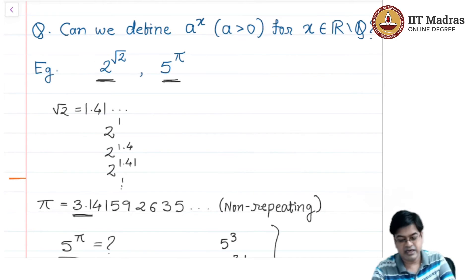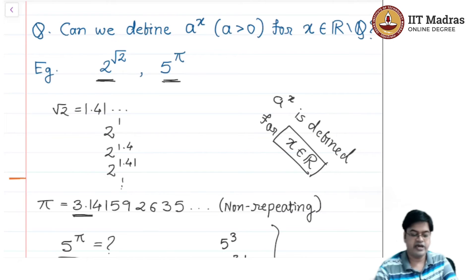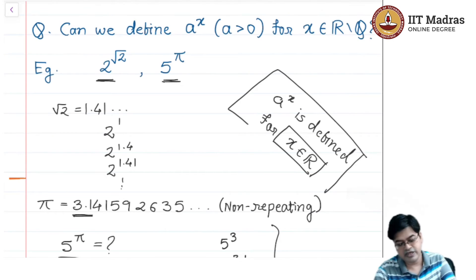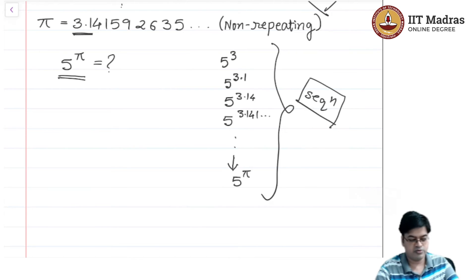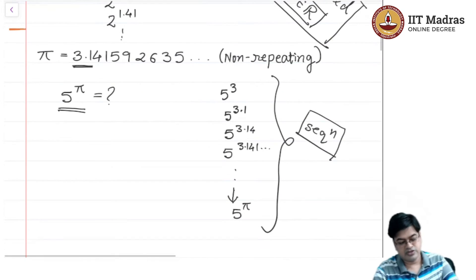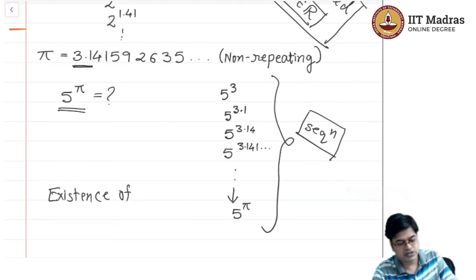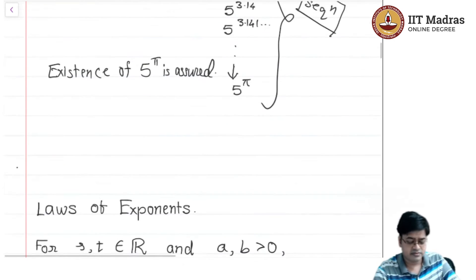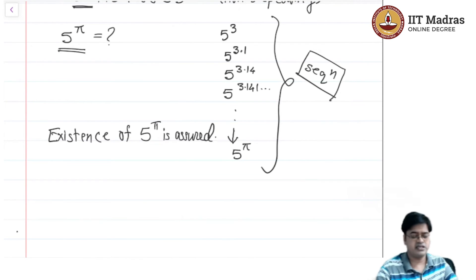This way we are very clear that a raised to x is defined for x belonging to the real line. This sets up the platform for defining an exponential function. This is very important: a raised to x is well defined for x belonging to R. This answer is given by convergence of sequences, which is outside the scope of the syllabus, but we know it exists for sure. I am guaranteeing the existence of 5 raised to pi. In case you are interested, you can take a basic course in analysis or calculus where you will study these things.